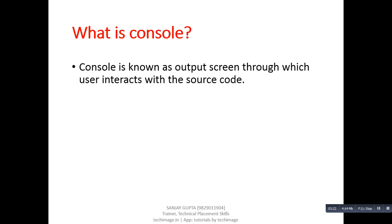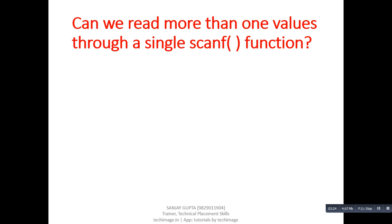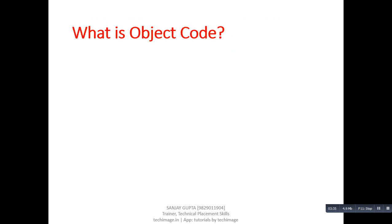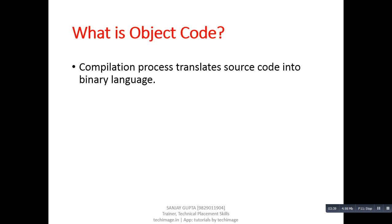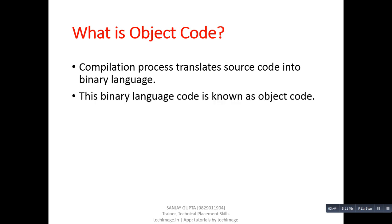Next question: can we read more than one value through a single scanf function? Answer: yes, we can. Next question: what is object code? Answer: the compilation process translates source code into binary language. This binary language code is known as object code.